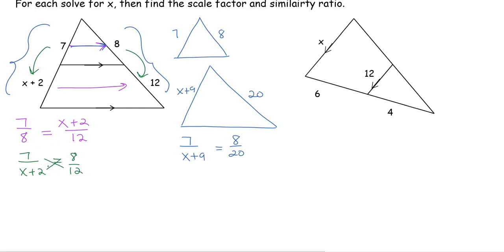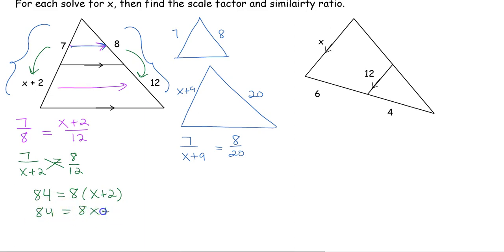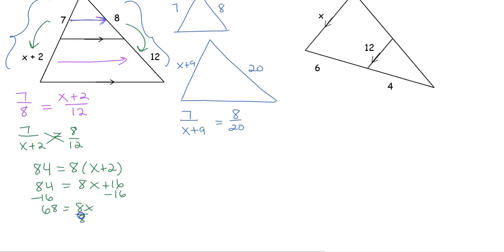Let's go ahead and cross multiply this example. 7 times 12 gives us 84, and 8 times x plus 2 — distribute that 8 to get 8x plus 16. Move the 16 over: 68 equals 8x. Divide by 8 and we find that x is going to be equal to 8.5.